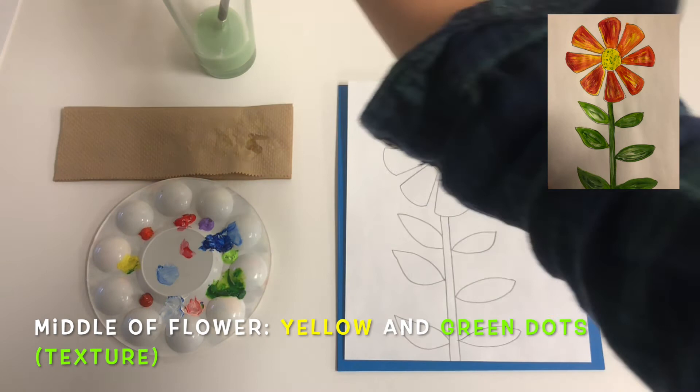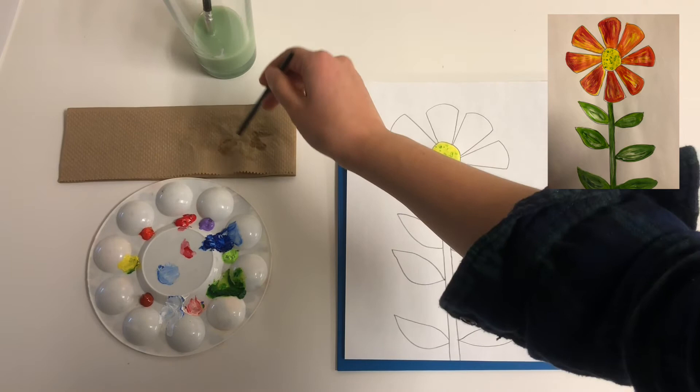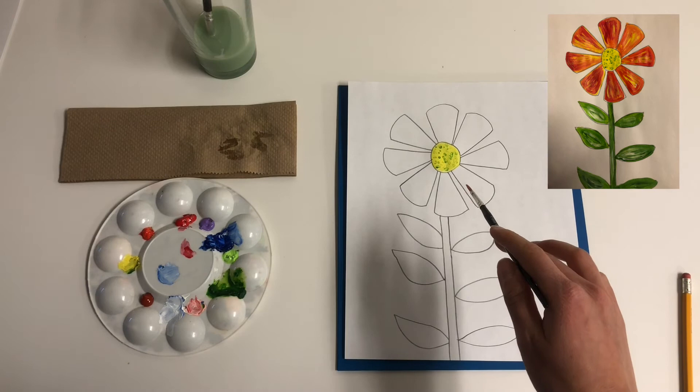Okay, now I am going to rinse my brush and I am going to switch colors. So, I am going to scrub the bottom of the container and then I am going to check on the paper towel. Okay, it looks clear. And now we are going to use warm colors for our petals.